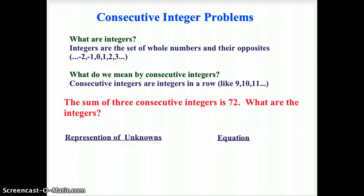Okay, so here's our problem that we're going to be working on first. The sum of three consecutive integers is 72. What are the integers?